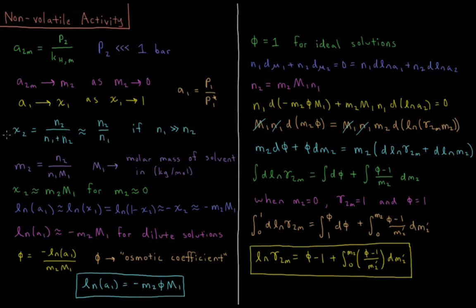Using an alternative approach, we look at the mol fraction of our solute, χ₂, which equals the number of moles of solute divided by the number of moles of solvent plus moles of solute. If our solute is very dilute, the number of moles of solvent N₁ is much greater than N₂, so N₁ plus N₂ is approximately equal to N₁. Therefore, the mol fraction of solute is approximately N₂ divided by N₁, the moles of solute over moles of solvent.